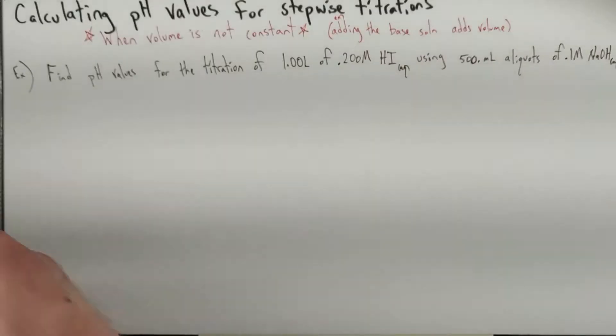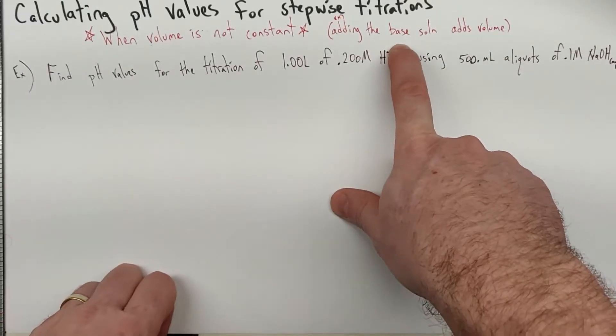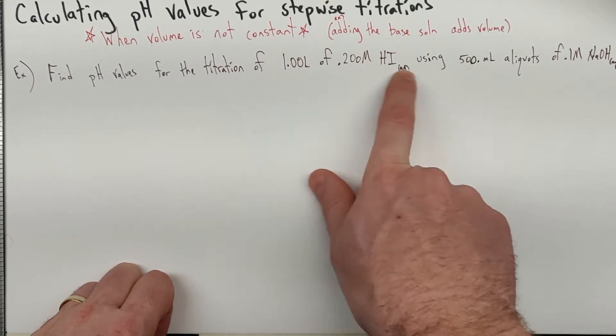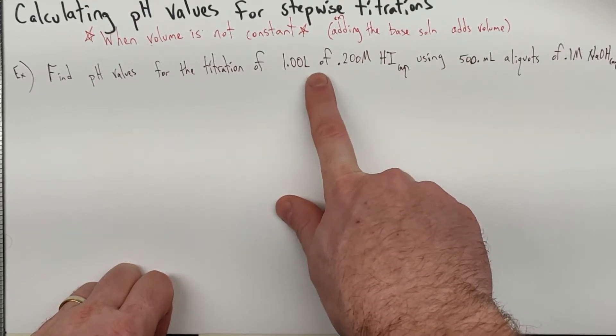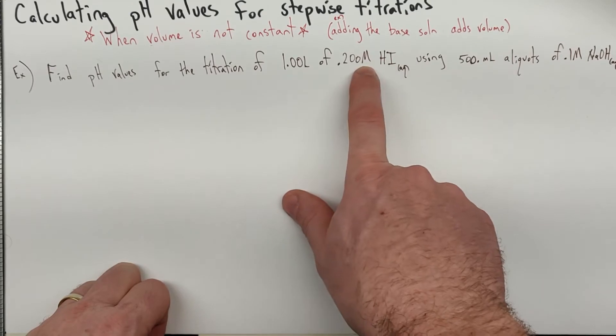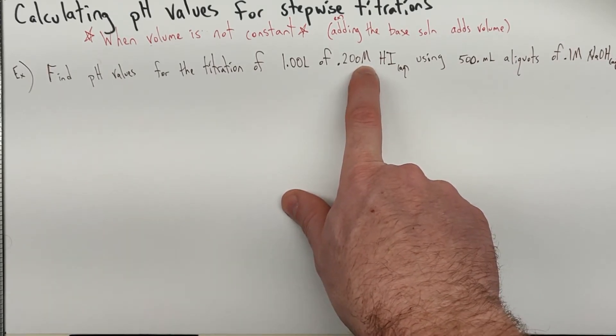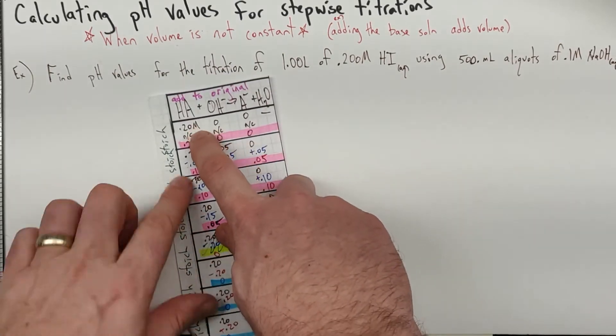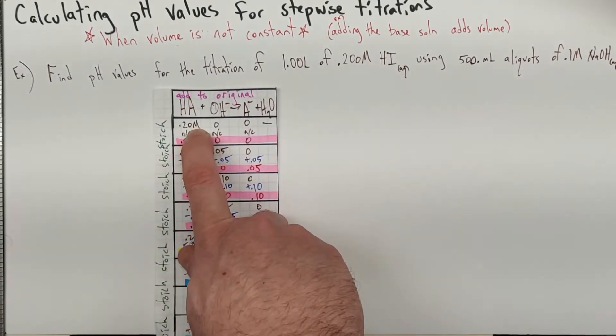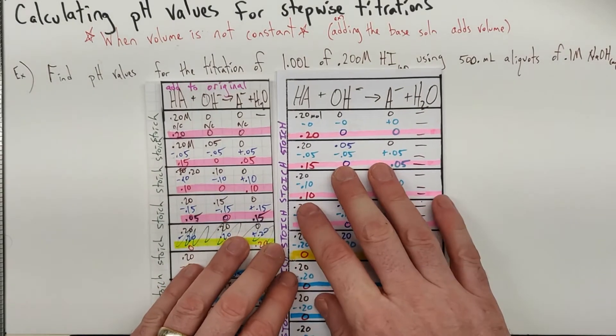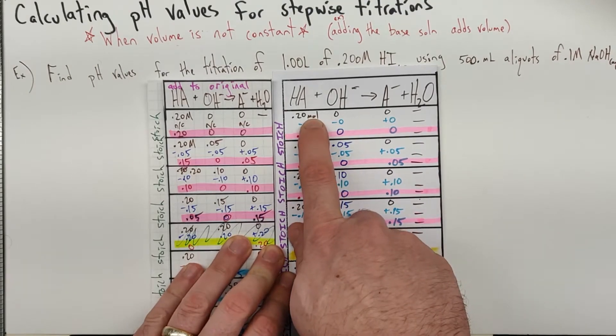We did stoichiometry with molarities because they're in the same solution and that volume is not changing. That doesn't happen so much in the real world because when we add our base to the solution, the volume is going to change. So a more realistic scenario: one liter of this, that gives us our 0.2 moles again. Very subtly different, 0.20 moles this time.